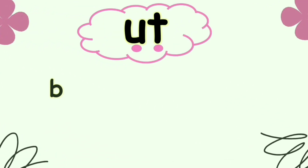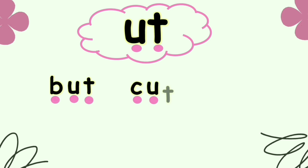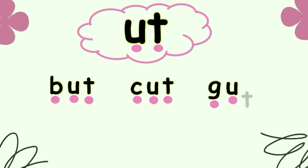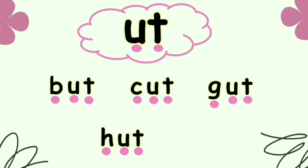Word family -UT. B-U-T, Butt. K-U-T, Cut. G-U-T, Gut. N-U-T, Nut.